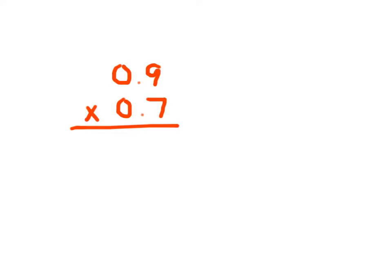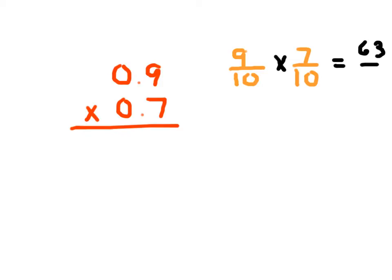Thinking about this another way: if we write each decimal in fraction form, 0.9 is 9 tenths and 0.7 is 7 tenths. Multiplying those together gives 9 times 7 in the numerator, which is 63, and 10 times 10 in the denominator, which is 100. So we get 63 hundredths, which written back in decimal form is 0.63.